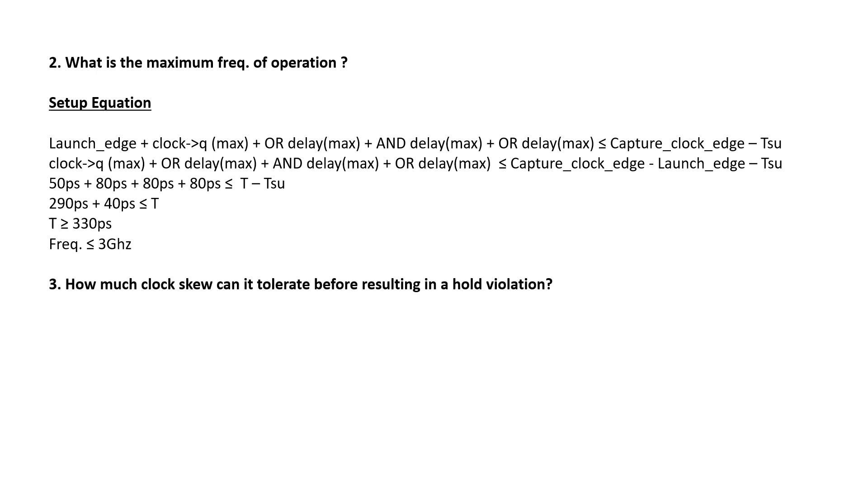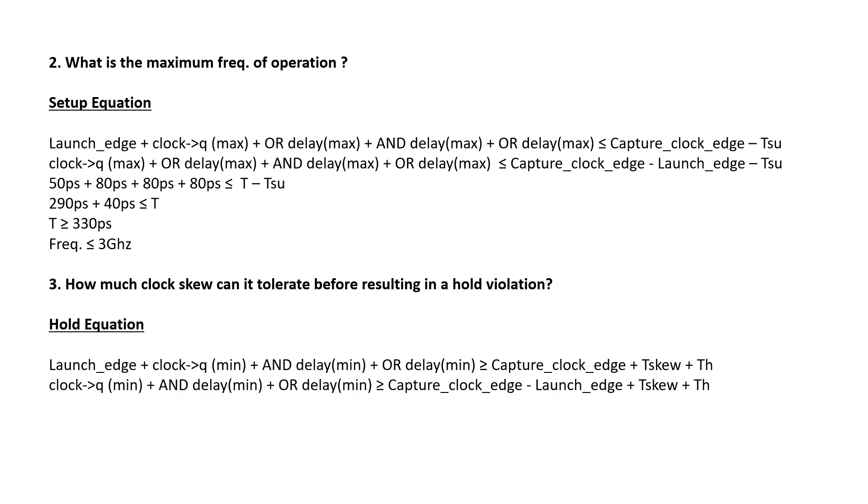Moving to the third question, how much clock skew can it tolerate before resulting in a hold violation? For this we will need the hold equation for the worst case scenario that is the fastest path. Using the hold equation which is launch edge plus clock to Q min delay plus min delay of the AND gate plus min delay of the OR gate should be greater than or equal to capture edge plus t skew plus t hold. Let's rearrange this equation. Now hold is checked on the same edge so both the launch clock edge and the capture clock edge is the same. It can be cancelled now. So the only unknown is t skew. After solving the equation, the maximum tolerable skew is 130 picosecond.